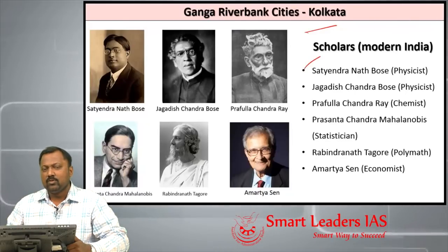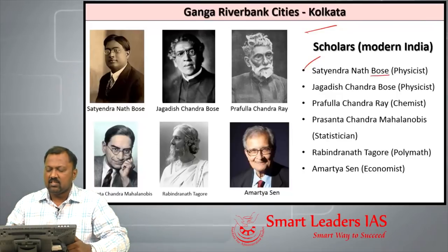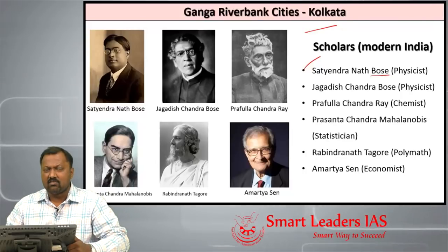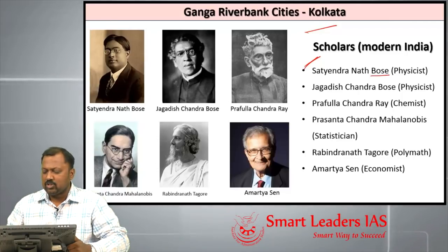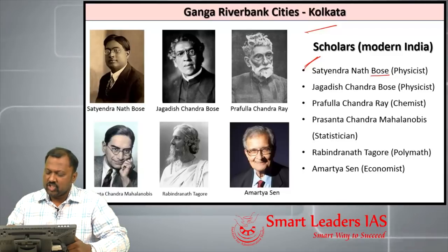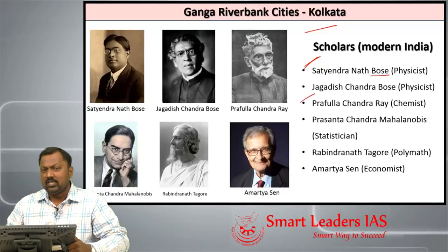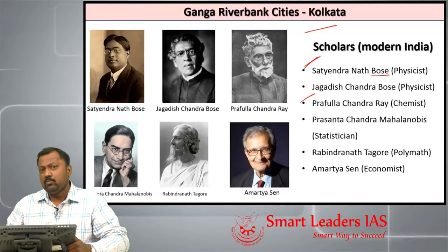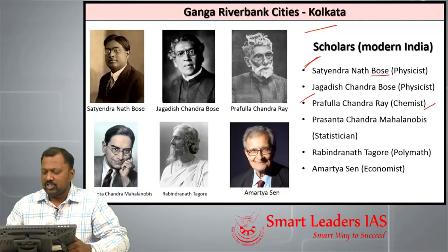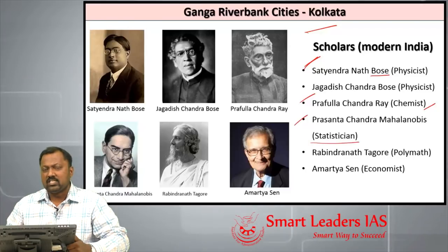Kolkata is home to many famous modern Indian scholars. Satyendranath Bose was a famous physicist — the Bose-Einstein equation is named after him, and the Higgs boson particle, otherwise called the God particle, is also associated with him. Other important scientists include Jagadish Chandra Bose and Prafulla Chandra Ray, who started Bengal Chemicals during the Swadeshi movement in 1905. PC Mahalanobis was the statistician responsible for establishing the Five-Year Plans in India.